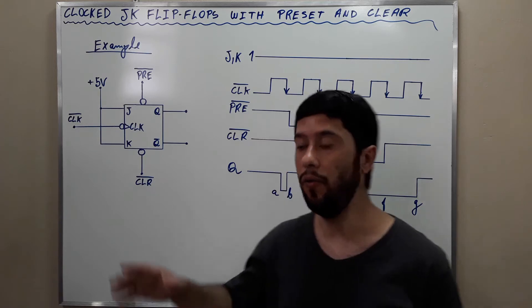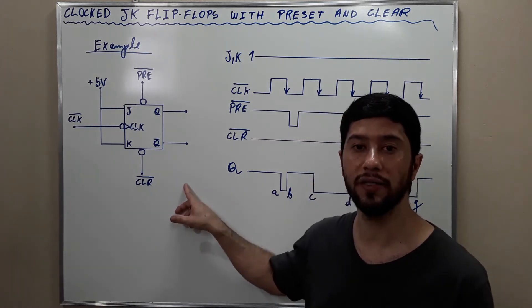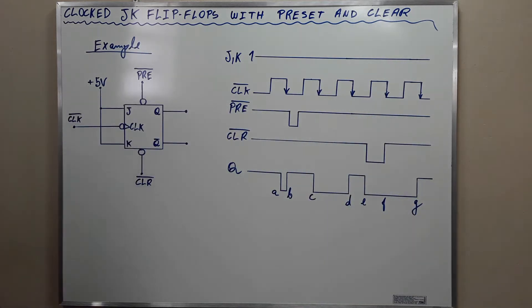Now, let's take a look at an example. Initially, preset and clear are in their inactive high state so that they will have no effect on Q. Thus, when the first negative going transition of the clock signal occurs at point A, the output will toggle from 1 to 0.